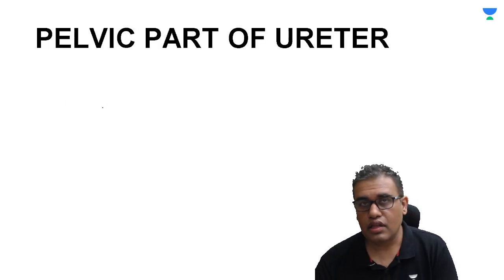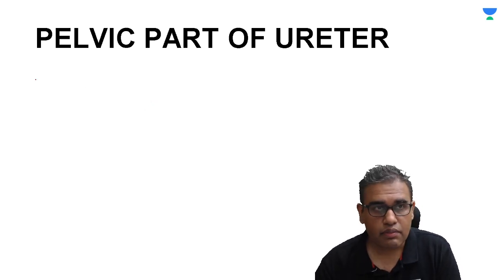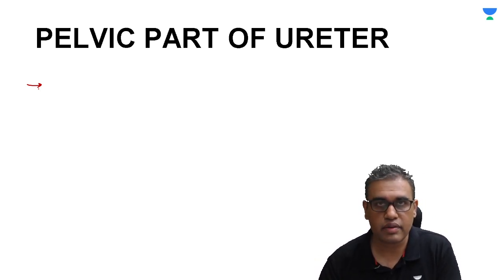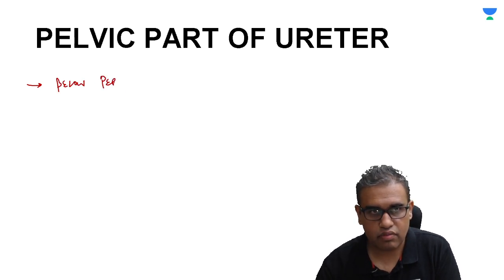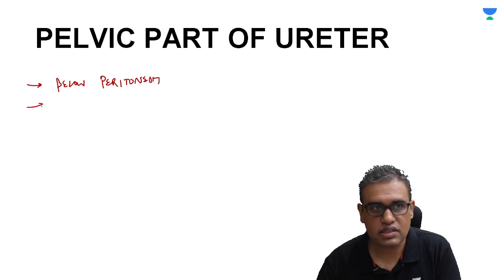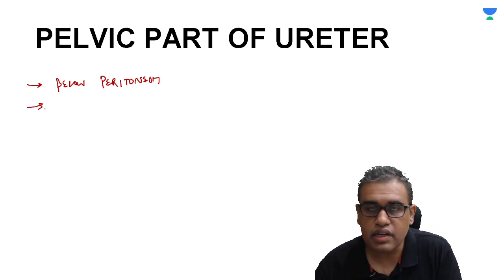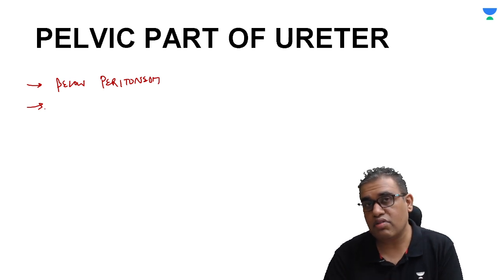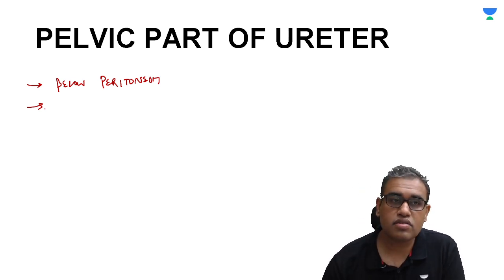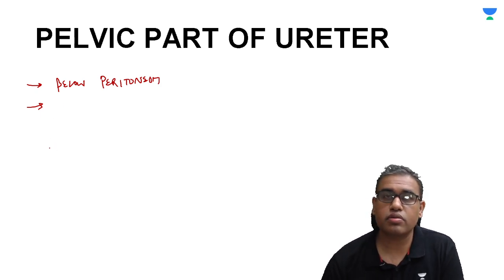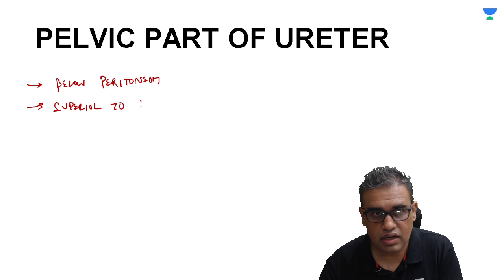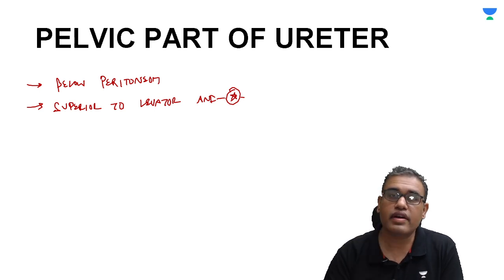Now let us see the relations of the pelvic ureter, which are very important. The entire pelvic part lies below the peritoneum — it is retroperitoneal. The ureter terminates into the bladder, which is located in the pelvis above the pelvic diaphragm. Therefore, the ureter is also located superior to the levator ani, or the pelvic diaphragm. Remember: it is superior to the levator ani — that is a very important point.